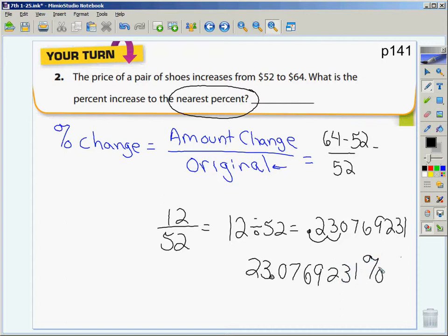It said to the nearest percent. So, I want to round to that one's column in the percentage. I look behind it in the tenths column. It's a zero. So, would I need to do anything to the three? What's this to the nearest percent, then? 23%. It's a 23% increase in price.